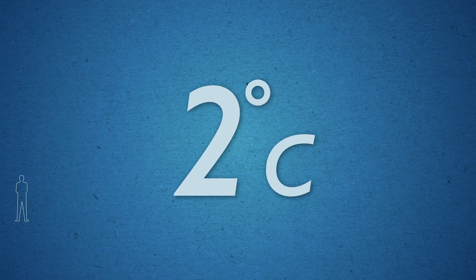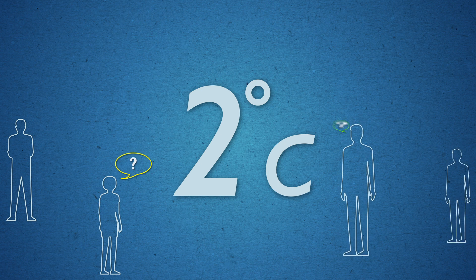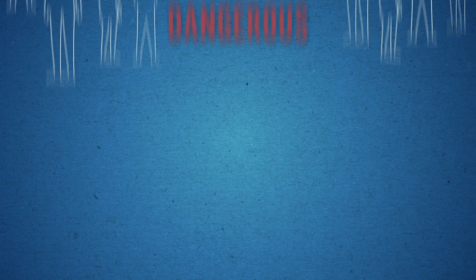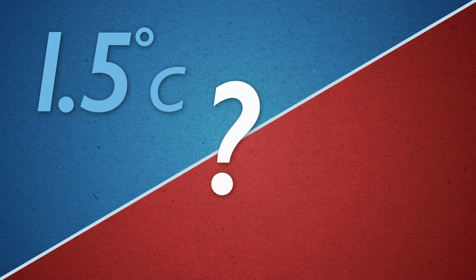But how has 2 degrees come to be accepted as the level at which climate change becomes dangerous? Why not 1.5 degrees Celsius or 2.5?